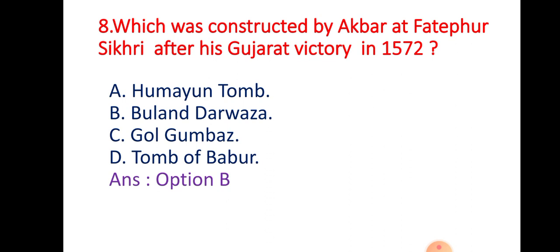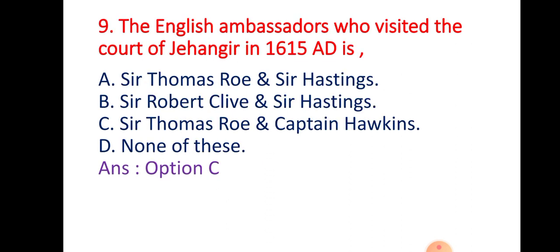Question 8: Which was constructed by Akbar at Fatehpur Sikri, his new capital, after his Gujarat victory in the year 1572? Options: A: Humayun's Tomb; B: Buland Darwaza; C: Gol Gumbaz; D: The Tomb of Babar. The right answer is Option B — Buland Darwaza.